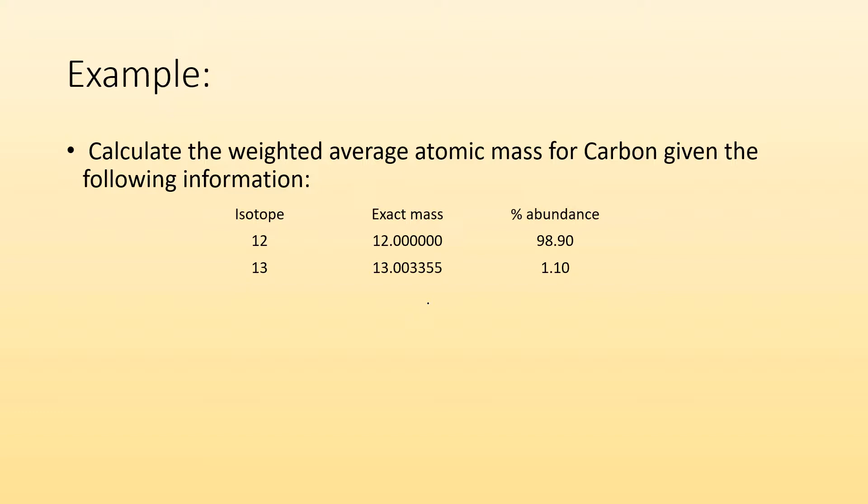All right, welcome back. So again, we're going to go to the weighted average atomic mass is going to equal the percent of the first one times the mass of the first one plus the percent of the second one times the mass of the second one, and then divide it by 100.